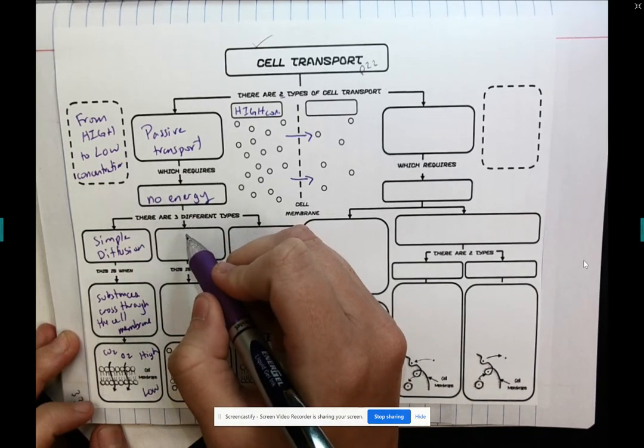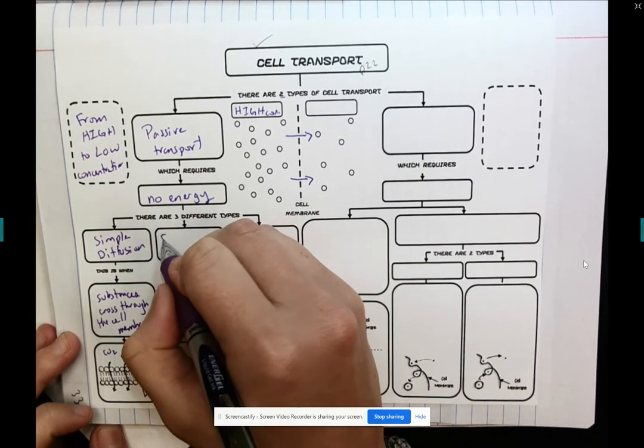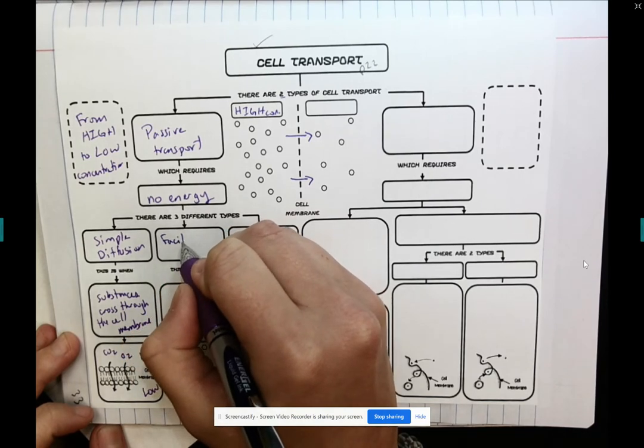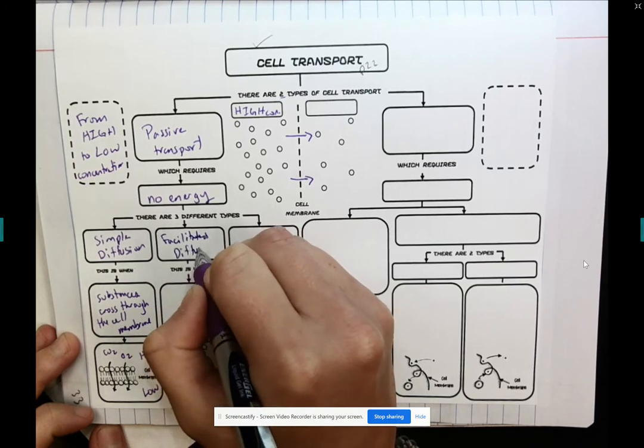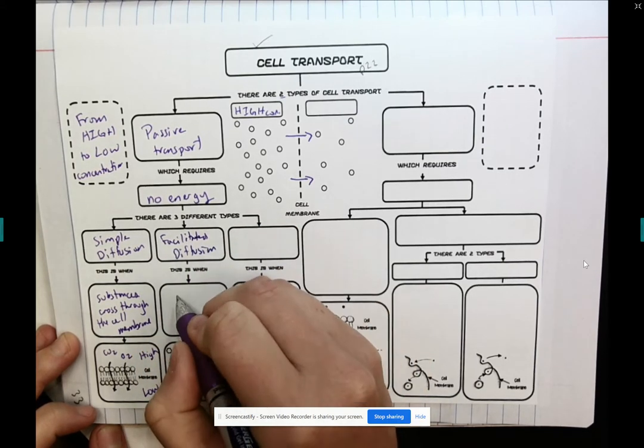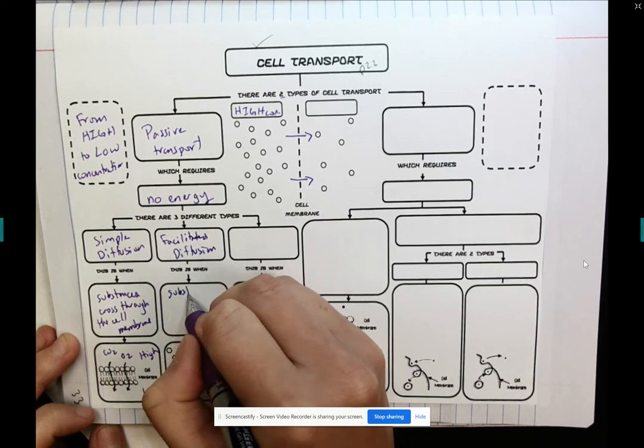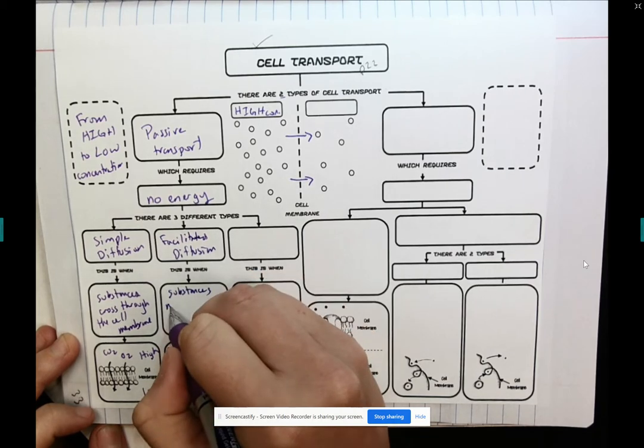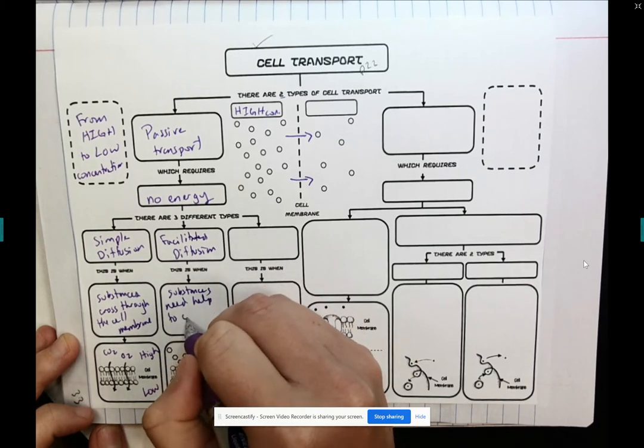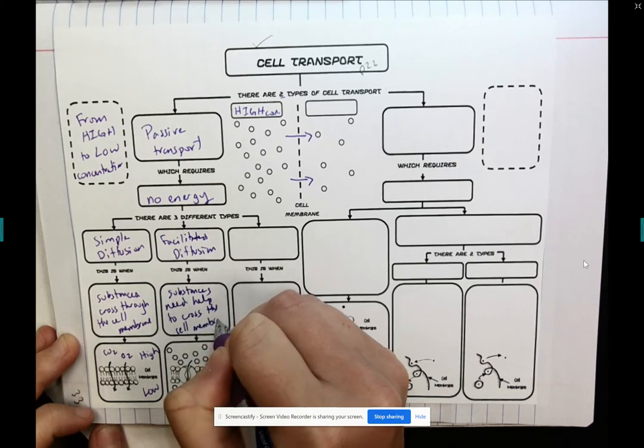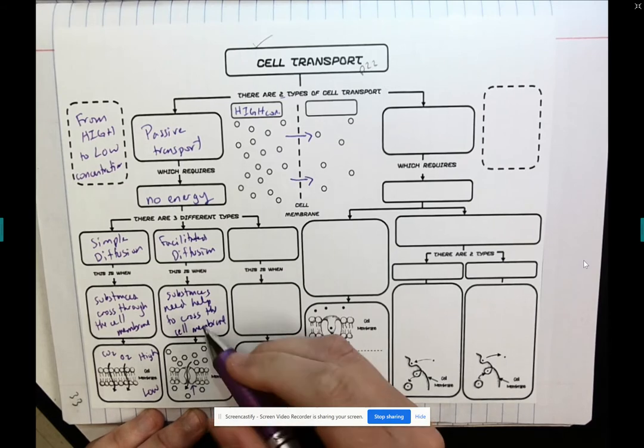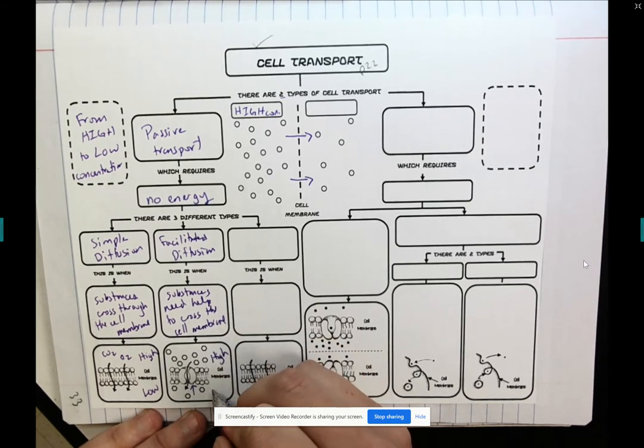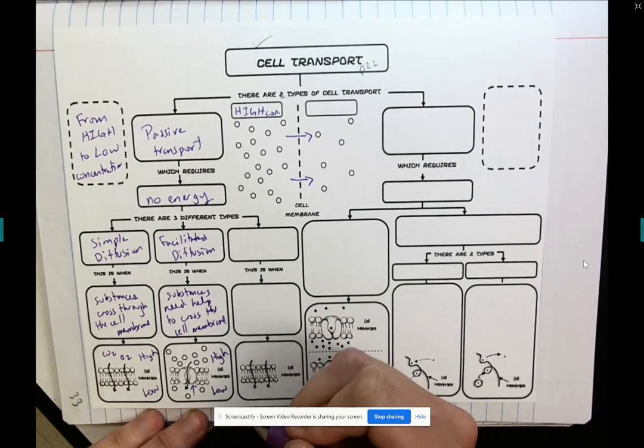The second type of passive transport is facilitated diffusion. This is when substances need help to cross the cell membrane. So they are going to use a protein to move from an area of high concentration to an area of low concentration.